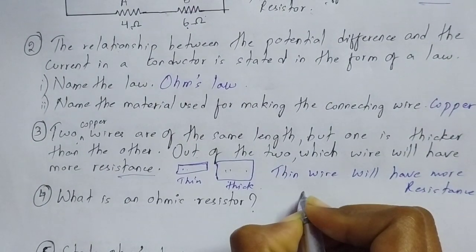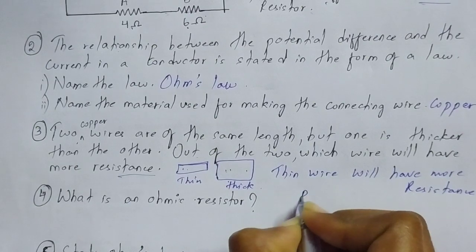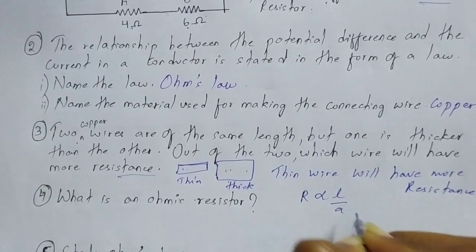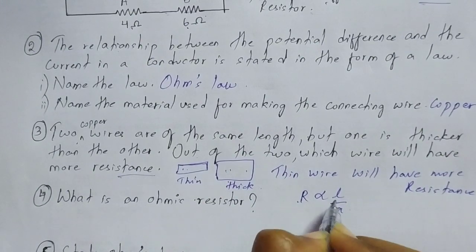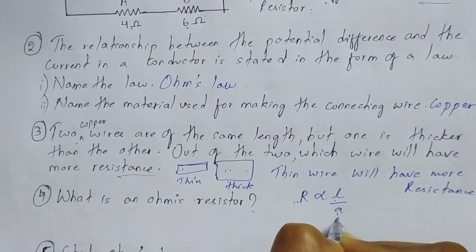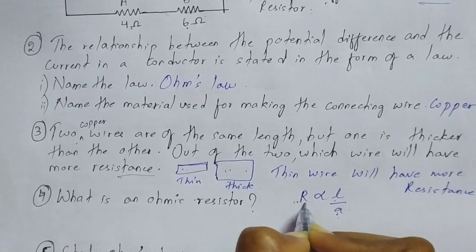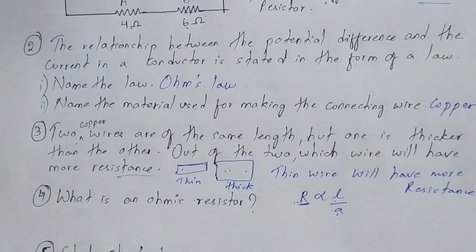This can also be shown using the formula: resistance is directly proportional to length divided by area. So resistance is directly proportional to length and inversely proportional to area. If area increases, resistance decreases, and if area decreases, resistance is more. This formula is also important.